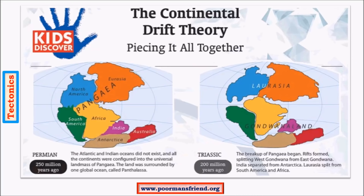Now let us go to the core concepts of continental drift theory. According to this theory, explained by Wegener in 1922, earth had a huge single continent called Pangaea, surrounded by a huge ocean called Panthalassa. All parts of the continent were intact during the Permian period, about 250 million years ago. There was also a narrow sea called the Tethys Sea between the major divisions of this landmass.